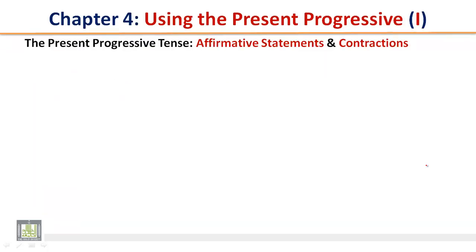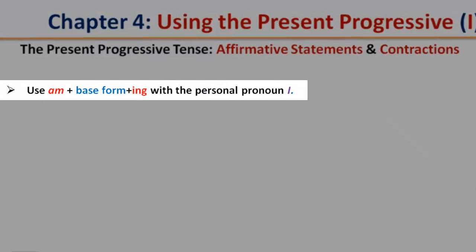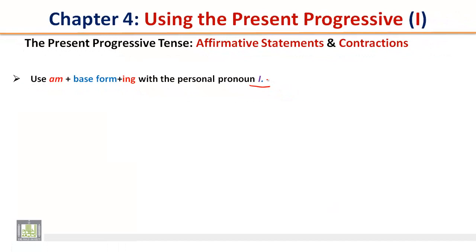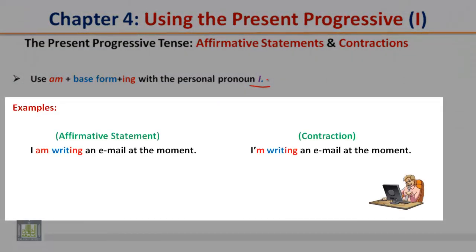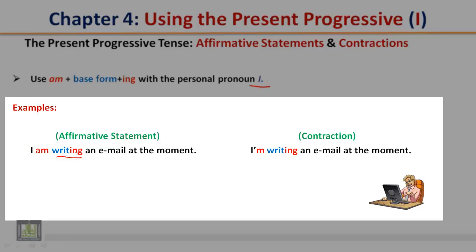The present progressive tense: affirmative statements and contractions. Use am plus base form plus -ing with the personal pronoun I. Examples — Affirmative statement: I am writing an email at the moment. Contraction: I'm writing an email at the moment.